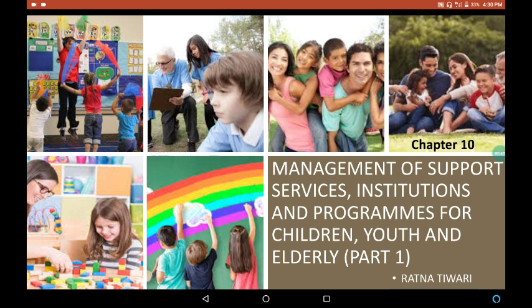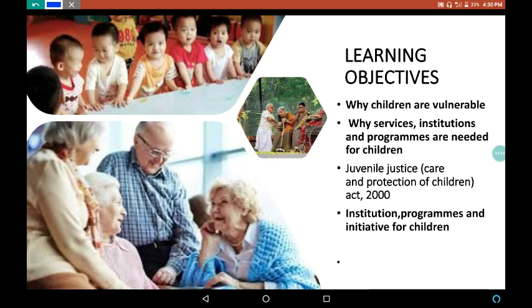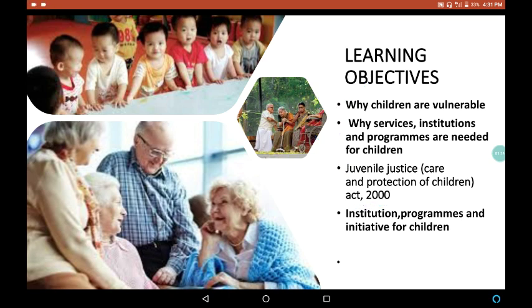This topic is divided into three parts. Here is the first part. Before starting this chapter, just take a look at the learning objectives. After watching this video, you will be able to know why children are vulnerable, why services, institutions and programs are needed for children, the Juvenile Justice Act 2000, and institutions, programs and initiatives for children.